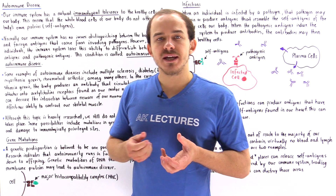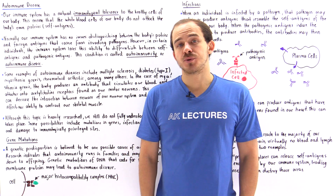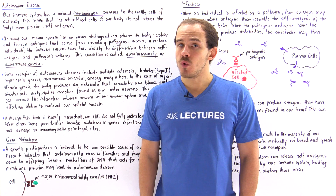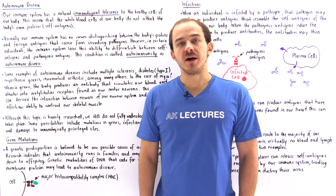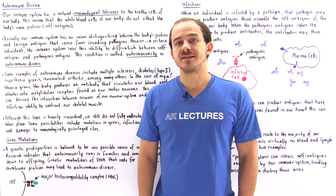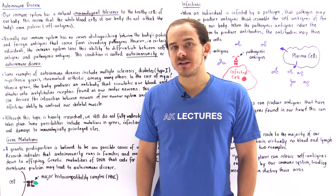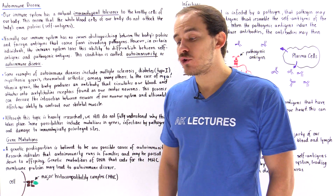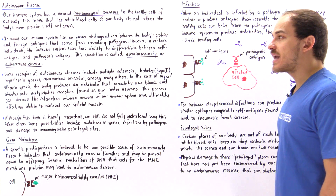Myasthenia gravis is an autoimmune disease that affects our skeletal tissue. Our body begins to produce an antibody that it normally shouldn't, and when this antibody is produced, it begins to circulate inside our blood. It binds onto acetylcholine receptors found between the motor neurons of our nervous system and our skeletal muscle tissue. By binding onto these acetylcholine receptors, it blocks the action potential — our electrical signal — from moving from the nervous system to our skeletal muscle.